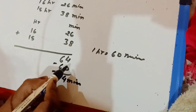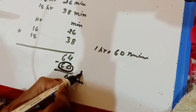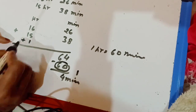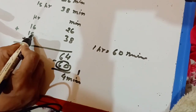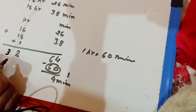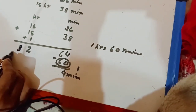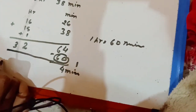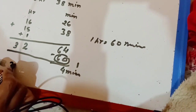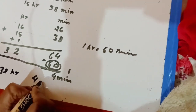When we minus 60 minutes here, 1 hour is left. So we add that 1 hour to the hours column. 6 and 5 is equal to 11, 11 and 1 is equal to 12, and 1 and 1 is equal to 2, carry 3. So 32. The final answer of this question is 32 hours 4 minutes.